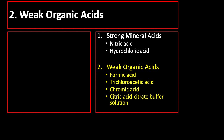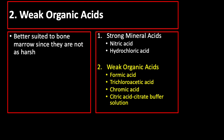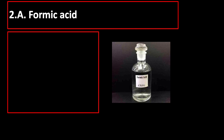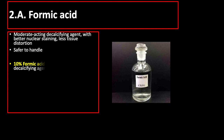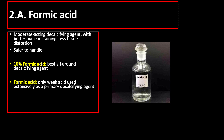The next type of decalcifying agent is weak organic acids, which are better suited to bone marrow since they are not as harsh. However, they act more slowly on dense cortical bone. The first weak acid used for decalcification is formic acid, which is a moderate acting decalcifying agent that produces better nuclear staining with less tissue distortion and is safer to handle than nitric acid or hydrochloric acid. Formic acid in 10% concentration is the best all-around decalcifying agent and the only weak acid used extensively as a primary decalcifying agent. The addition of citrate accelerates decalcification by chelating the calcium as it is liberated from the bone.